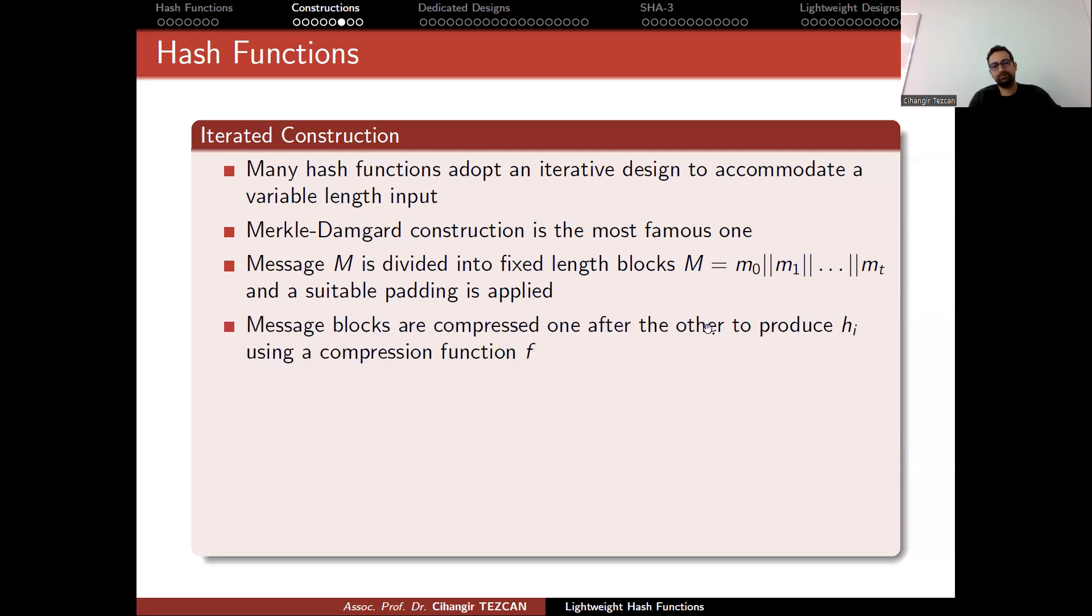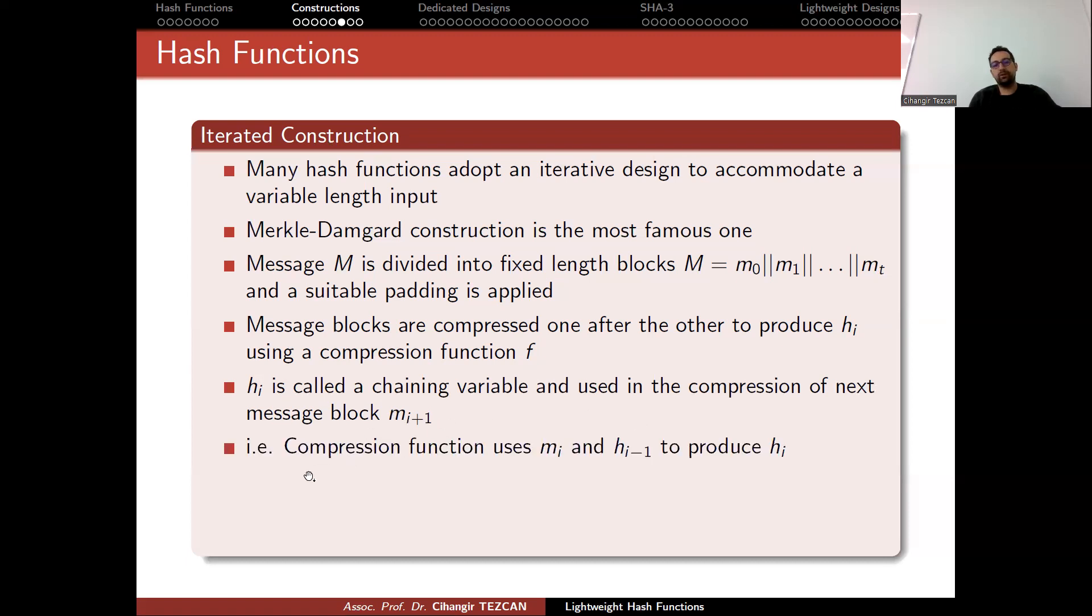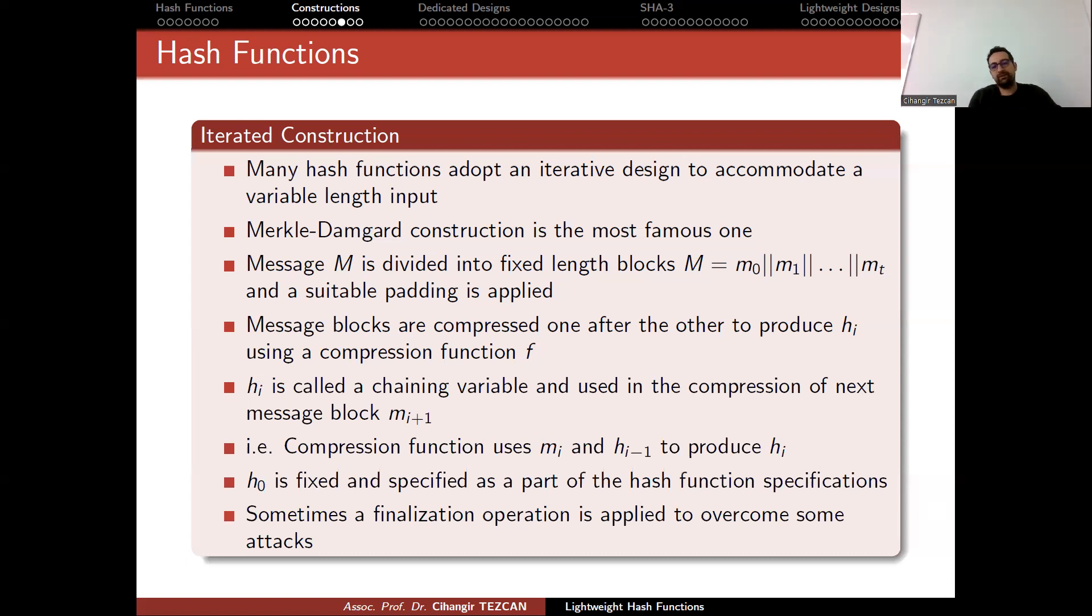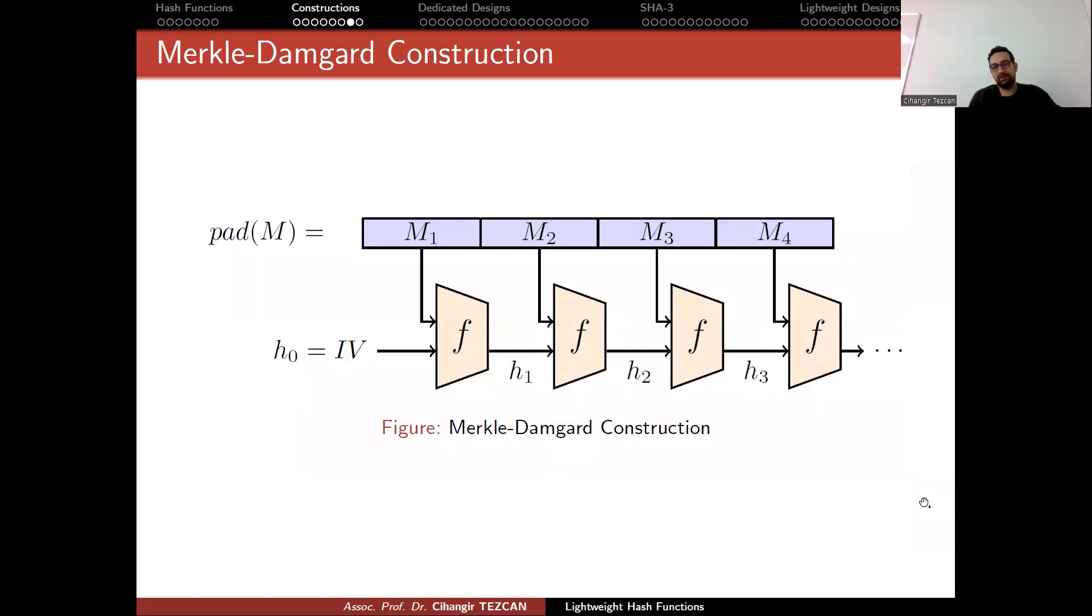And padding is really important here. If you do padding in the wrong way, then your hash function can be broken easily. Message blocks are compressed one after the other to produce h_i using a compression function F. h_i is called a chaining variable and used in the compression of next message block m_{i+1}. In other words, compression function uses m_i and h_{i-1} to produce h_i. h_0 is fixed and specified as a part of the hash function specification. So in the documents, you will see an IV initialization vector, which starts this process. And sometimes the finalization operation is applied to overcome some attacks.